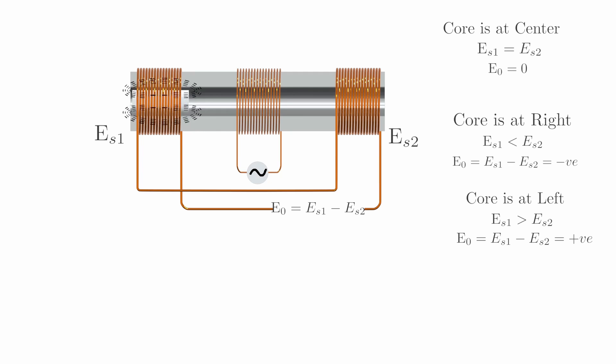The LVDT utilizes the magnitude and polarity of the net EMF to measure the displacement of the core from the null position. By analyzing the output voltage, which corresponds to the net EMF, we can accurately determine the linear displacement being measured.